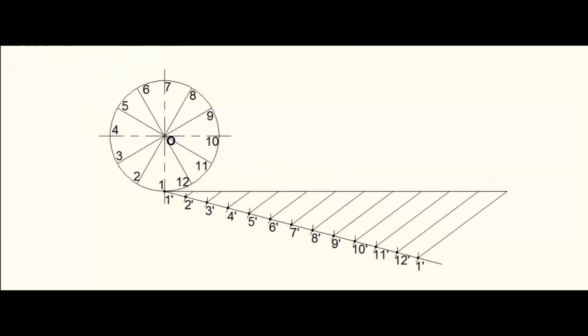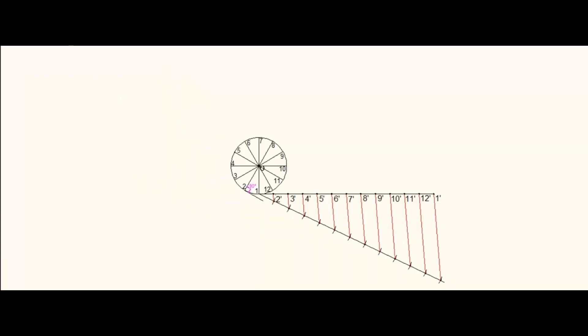By this, the original line is divided into equal number of divisions. Now, draw a perpendicular line from each divisional points of the circle.